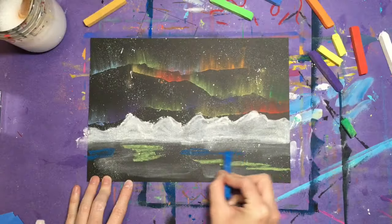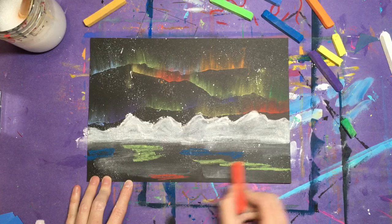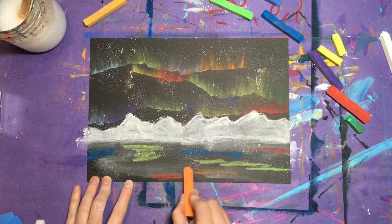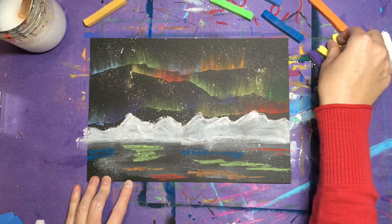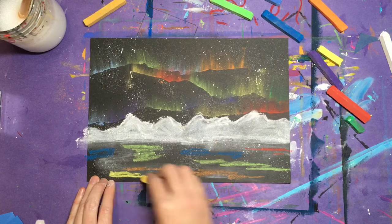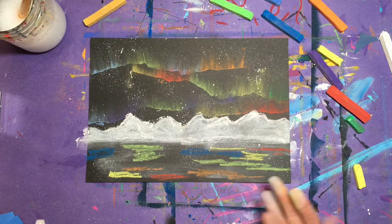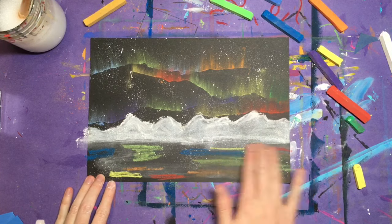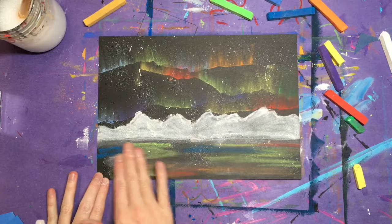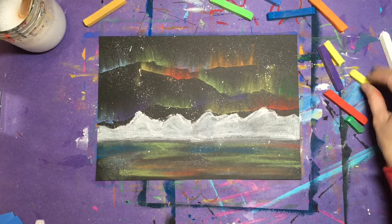Speaking of reflections, we should see some of those northern lights reflected on top of the water surface. So bring some of that color down below the horizon line, but it's not going to be as detailed and sharp as the lights up above in the sky. So you want to blend or muddy that by rubbing it side to side with your fingers.